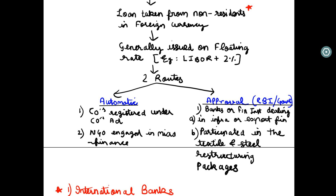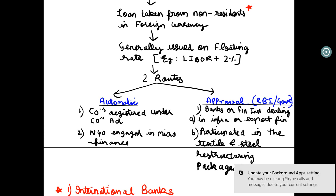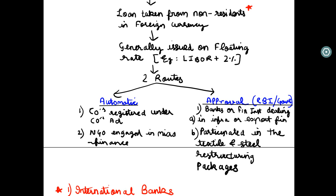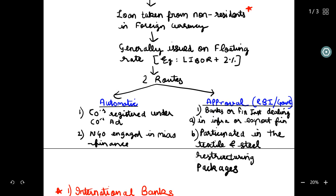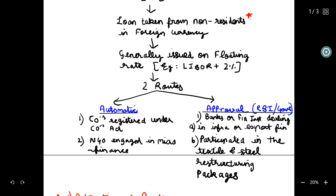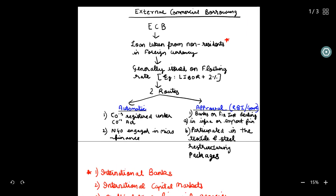Approval route milta hai banks or financial institutions jo infrastructure ya export-oriented firms hain — especially banking firms — unko approval route milta hai. Through this they can borrow funds from foreign banks. Also, the banks which participate in the textile and steel restructuring packages — yeh thoda unique sa point hai — jo textile-steel restructuring package mein participate karti hain bank, unko bhi approval route se ECB milega.